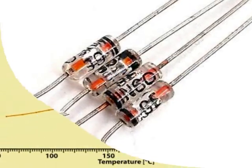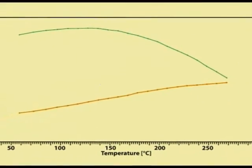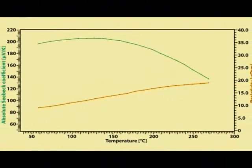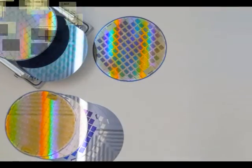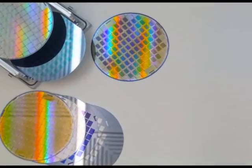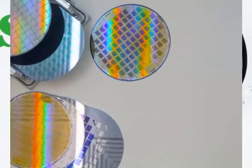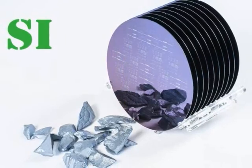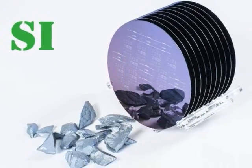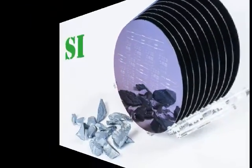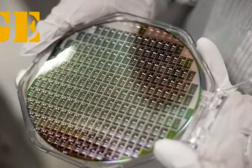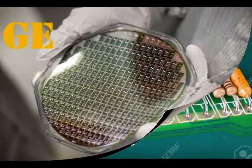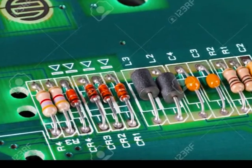One of the best reasons to choose silicon over germanium is its excellent thermal stability. This is due to its higher melting point, which allows it to perform better in hot conditions. While germanium has a higher electrical conductivity, its insulating properties make germanium a poor choice for most consumer electronics.